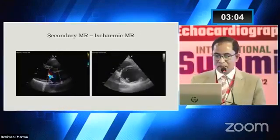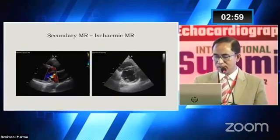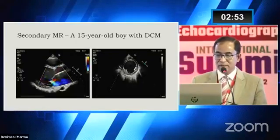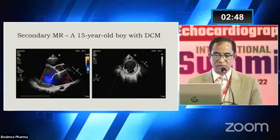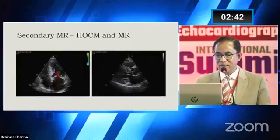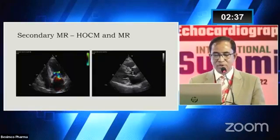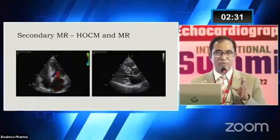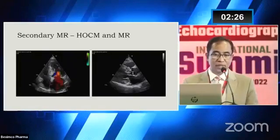This is an example of secondary MR — the posterior wall is virtually akinetic, causing papillary muscle dysfunction and MR. This is a case of a 15-year-old boy with dilated cardiomyopathy, where the secondary MR is due to dilatation of the annular ring. This is an example of hypertrophic cardiomyopathy, where the valve itself may be abnormal, or the valve may be normal but with abnormal motion due to significant systolic anterior motion of the mitral valve.